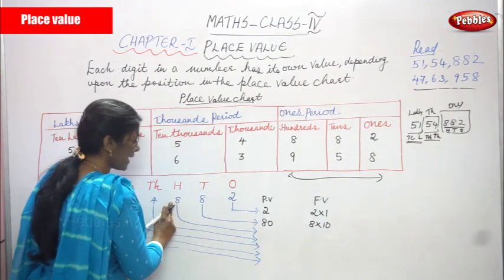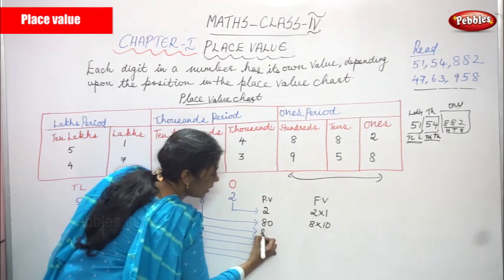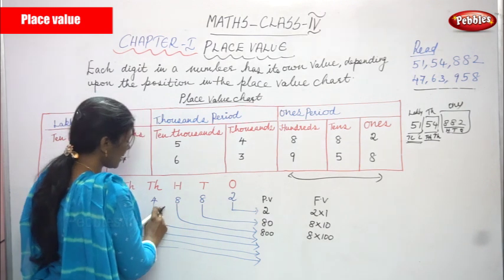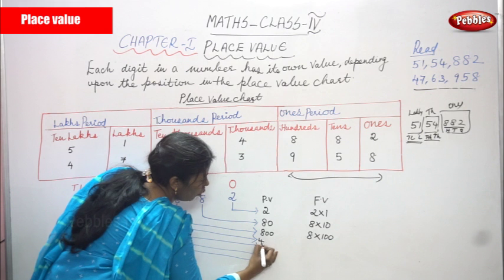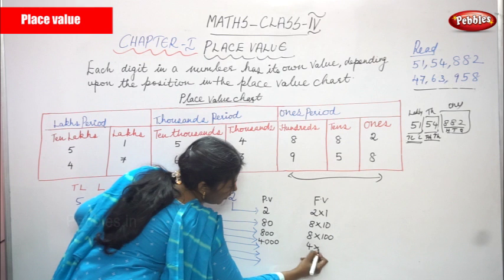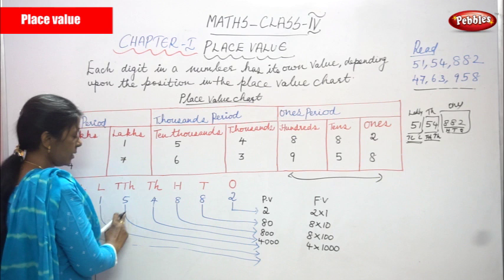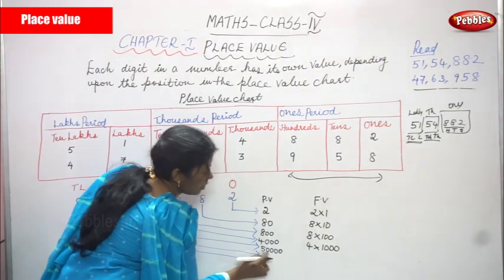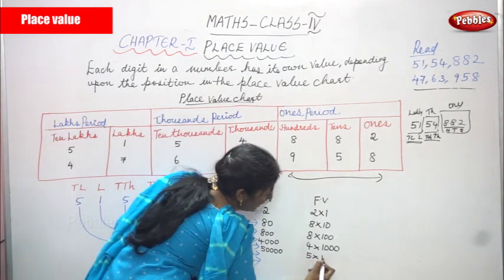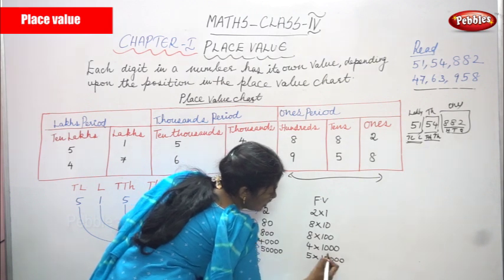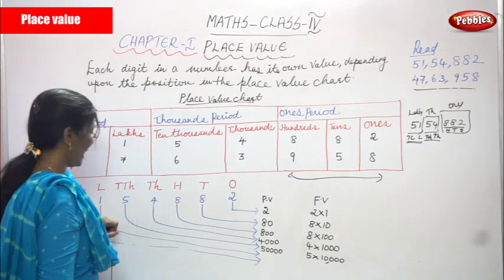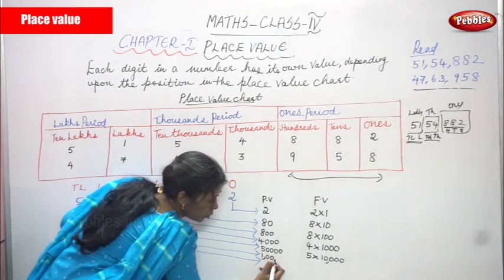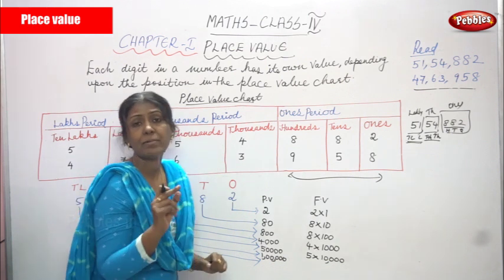The number in the hundreds place is 8: place value is 800, face value is 8 into 100. The number in the thousands place is 4: place value is 4,000, face value is 4 into 1,000. The number in the ten-thousands place is 5: place value is 50,000, face value is 5 into 10,000 - that means 4 zeros. In the lakhs place, the number is 1: place value is 1 lakh, which means 5 zeros. Face value is 1 into 1 lakh.